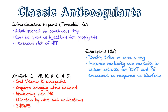Warfarin, otherwise known as coumadin, is an oral vitamin K antagonist. It inhibits factors 2, 7, 9, 10, protein C, and protein S. Warfarin requires bridging when initiated because of its effect on protein C and protein S — patients actually become prothrombotic, meaning they tend to form clots when initially started on coumadin. Patients on coumadin need to be monitored with an INR, and their goals depend on why they're being treated. The problem with coumadin is that it's affected by many things, including diet and medication — from eating leafy vegetables to taking an oral vitamin to starting antibiotics. All these things affect the amount of coumadin you need, so it requires very close and frequent monitoring with INRs. On the plus side, coumadin is very cheap and inexpensive for patients.